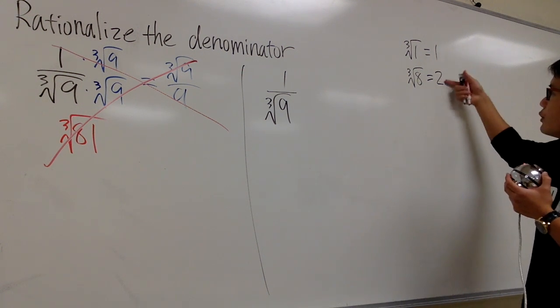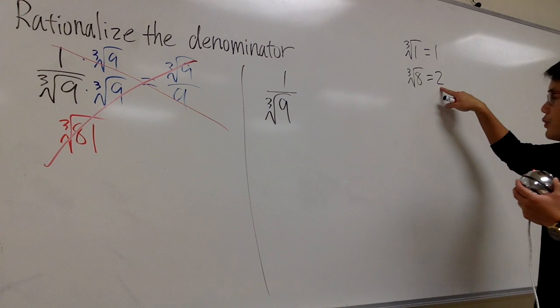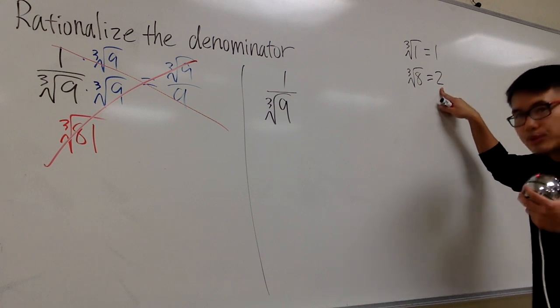Because I'm going to write down 1, 2, 3, 4, 5, and so on, right? This is 2, and we just do 2 times 2 times 2. We get 8.